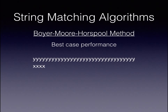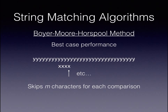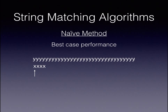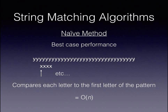In the best case, we have a string consisting entirely of the letter Y and a pattern consisting entirely of the letter X. We compare the X and Y at the end of the pattern, and because we found a mismatch, we can jump past the entire length of the pattern for every comparison. We skip M characters for each comparison, and as there are N letters in total, the order of the algorithm in the best case is O(N/M). Compared to the naive method, this best case performance is a significant improvement. The naive algorithm will compare the letter X to the letter Y, shift forwards by one, compare again, and so on, meaning it compares each letter to the first letter of the pattern — which is O(N).